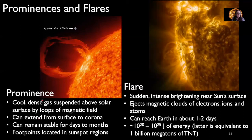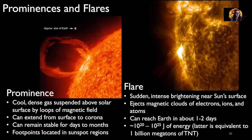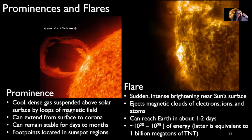Prominences can extend from the surface up into the sun's corona — the sun's outermost atmosphere. They can be stable on the sun's surface for a few days up to a few months, and their foot points are located in sunspot regions.